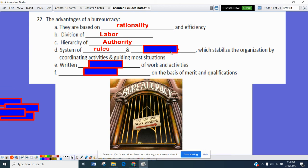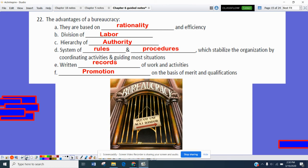There are rules. And aside from rules, there's procedures, which stabilize the organization for conducting or coordinating activities and guiding most situations. There's usually written records of work and activities. And finally, promotion within bureaucracy is usually based on merit, meaning that you have achieved it or earned it, or you have the right qualifications to have that position.